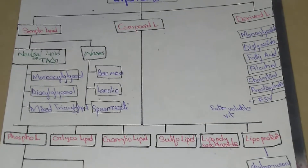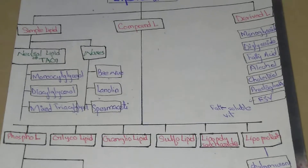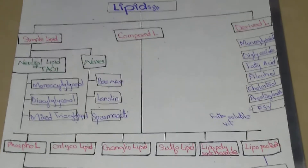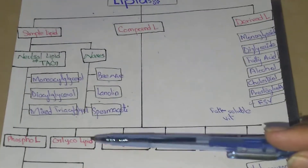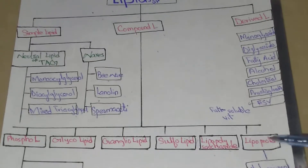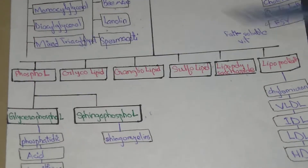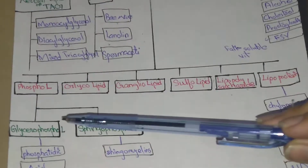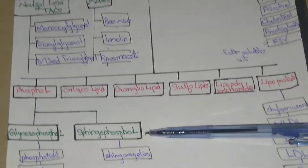Now we will classify the compound lipids. Compound lipids are esters of fatty acid with alcohol plus an additional substance, which may be in the form of phosphorus, nitrogen, etc. Compound lipids are further divided into six types: phospholipids, glycolipids, gangliolipids, sulfolipids, lipopolysaccharides, and lipoproteins.